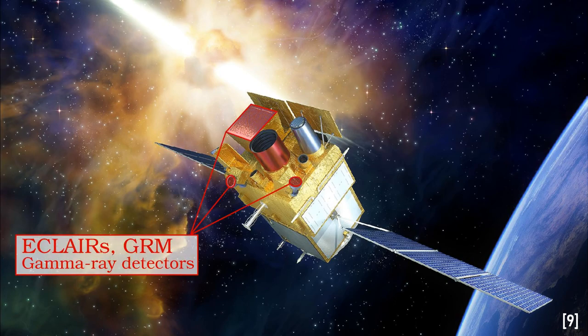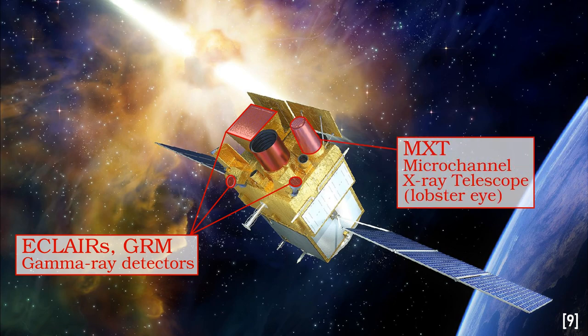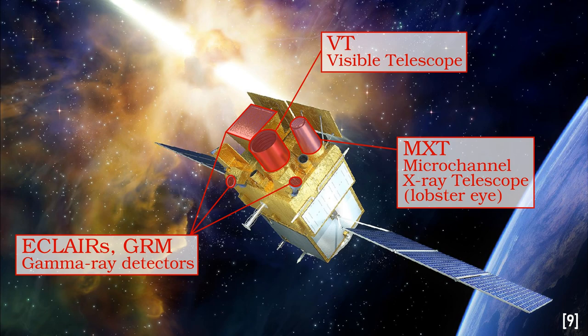The two types of gamma-ray detectors will first pick up an event. A lobster-eye telescope will pinpoint it more finely. A conventional telescope will also pick up visible light from the event. The SVOM satellite will quickly communicate the exact location of the gamma-ray burst in space to a network of Earth-based observers.